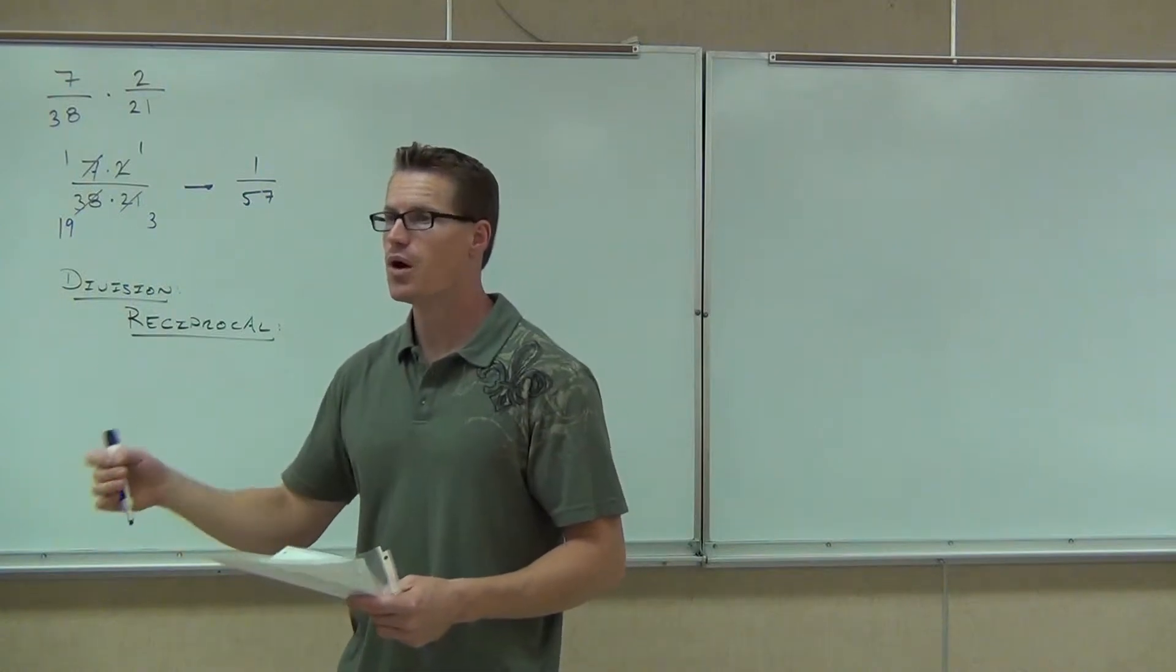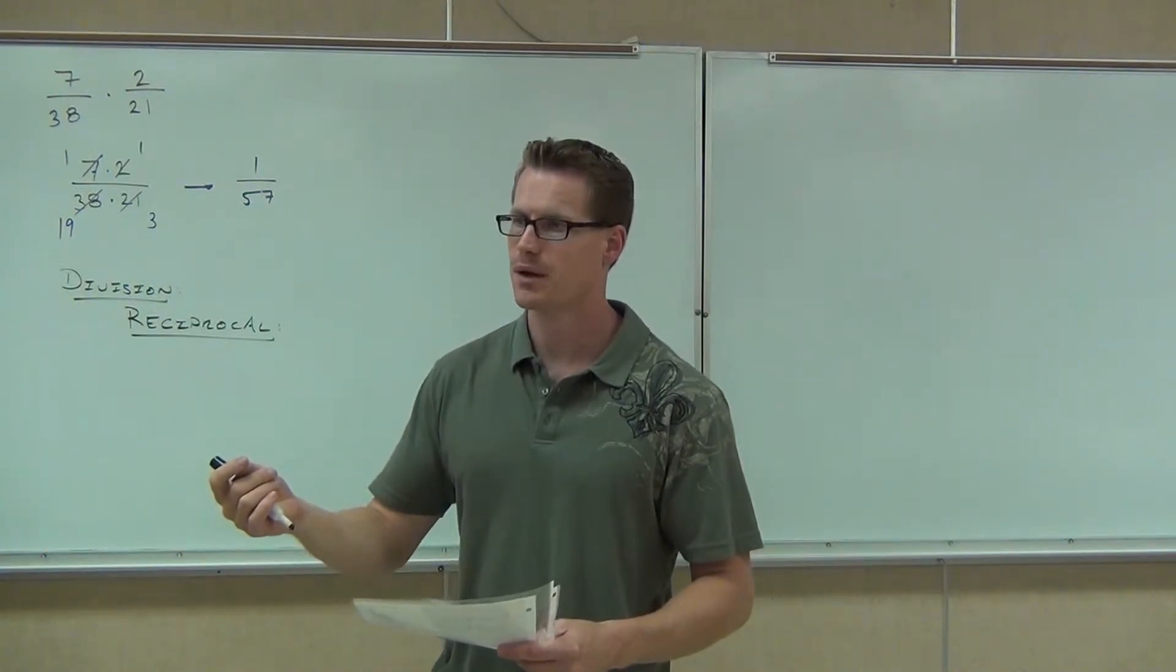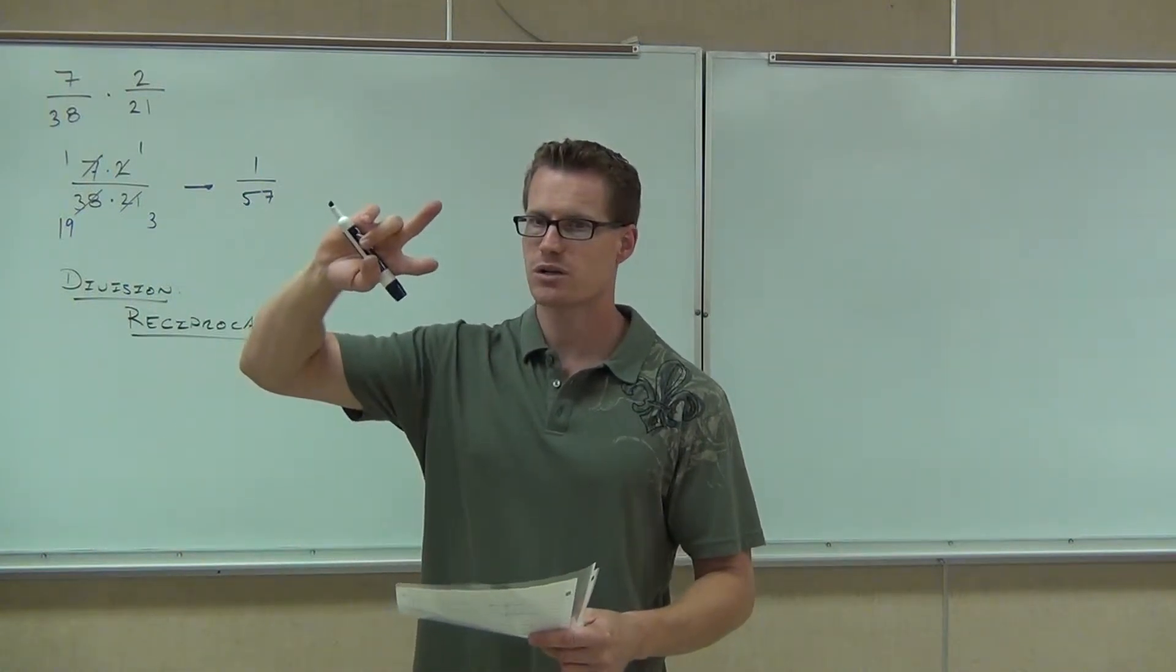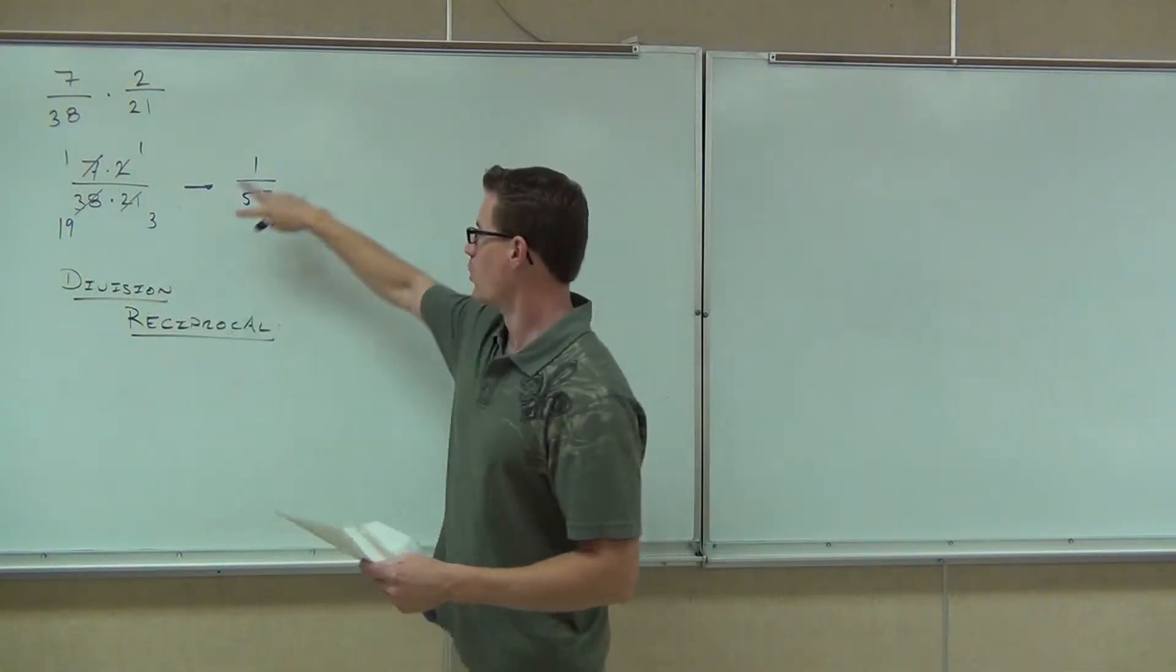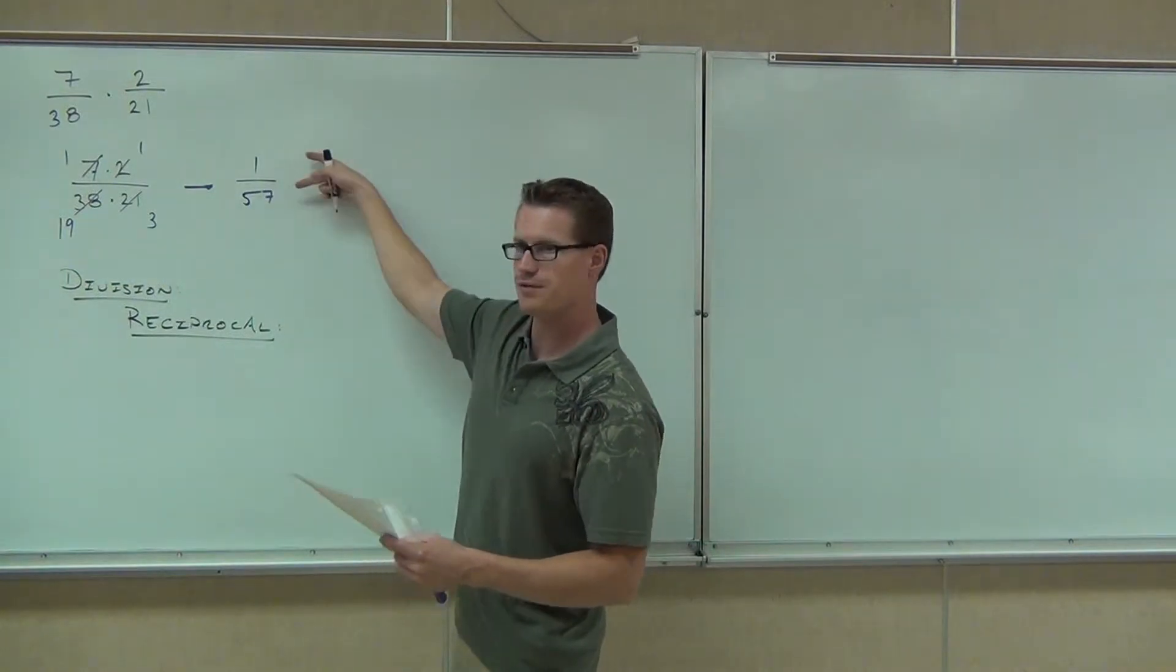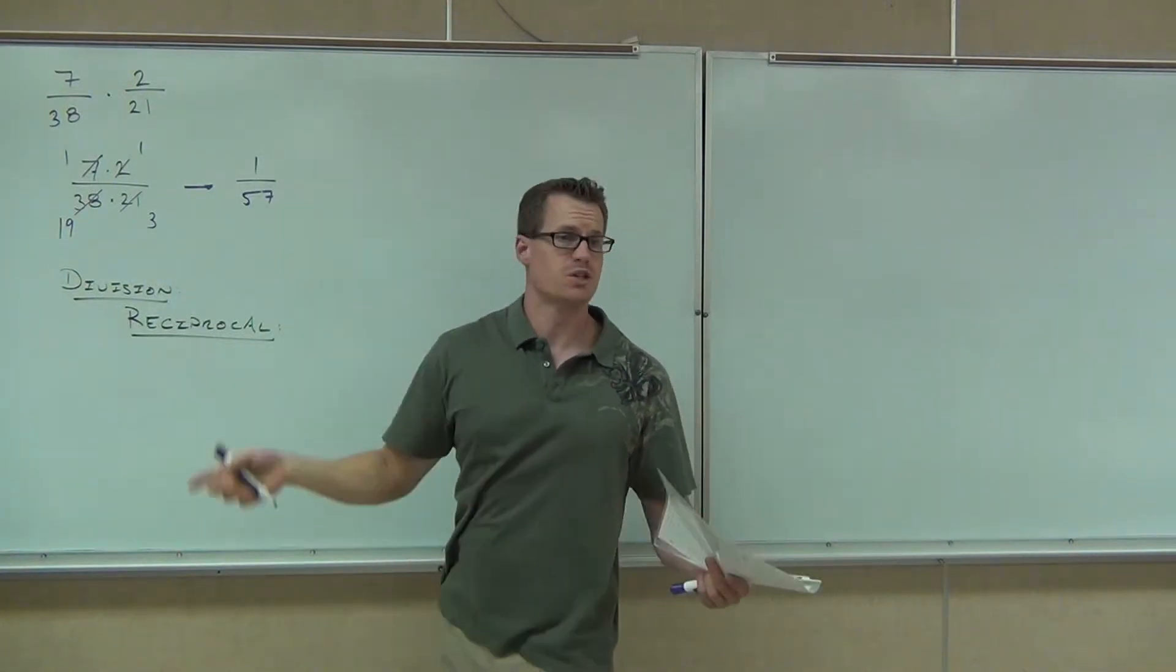So if I asked you to find the reciprocal or to reciprocate a fraction, what you'd do is you would take your fraction and write it upside down. Does that make sense to you? So instead of 1 over 57, we would have 57 over 1. That's all a reciprocal is.